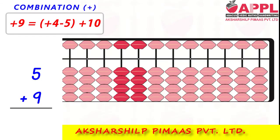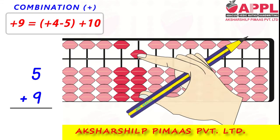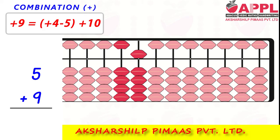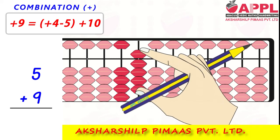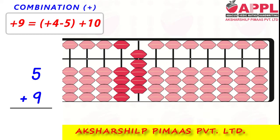Combination for Addition: 5 add 9. Bring 5 on the abacus. For adding 9, there is not sufficient beads, so add 4, less 5, add 10. That is 14.